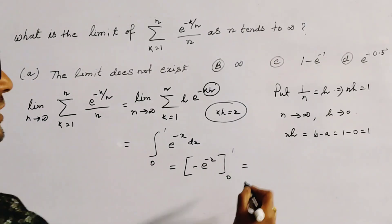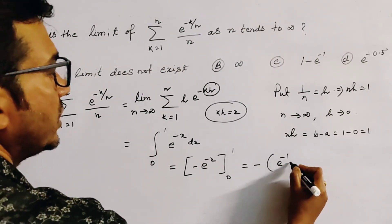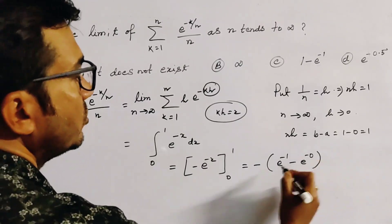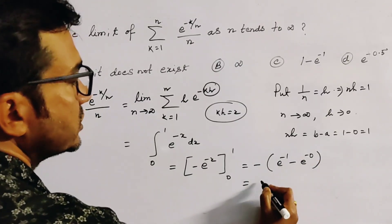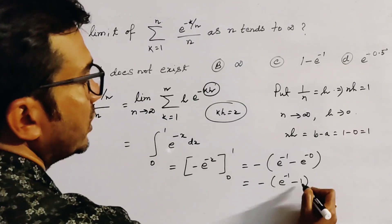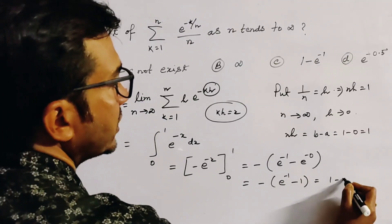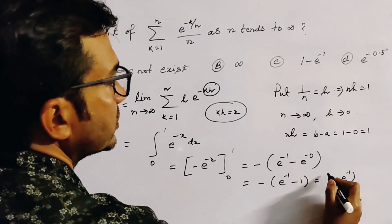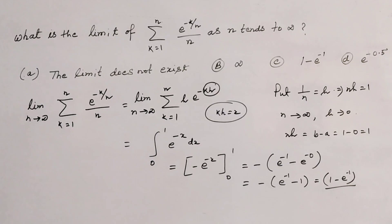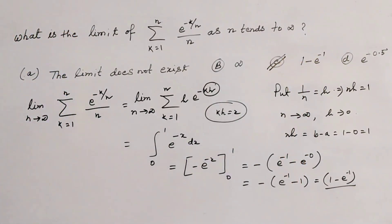The integration of e to the power minus x with limits 0 to 1 gives: minus e to the power minus 1, minus e to the power minus 0. So this equals minus e to the power minus 1 minus 1, which gives 1 minus e to the power minus 1. Our correct answer is option C.